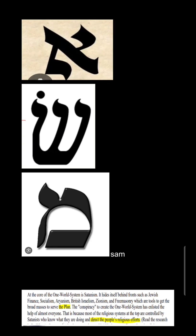When you rearrange the Aleph, Shin, and Mem, it looks just like the word N-W-O, doesn't it? And it still spells the word Sam in English. Now what that says, at the core of the One World system, is Satanism.